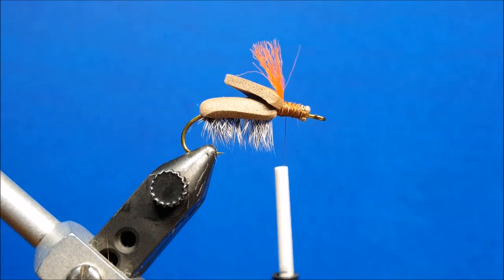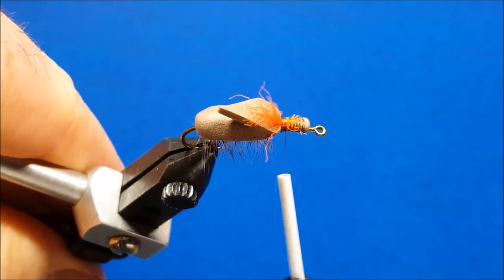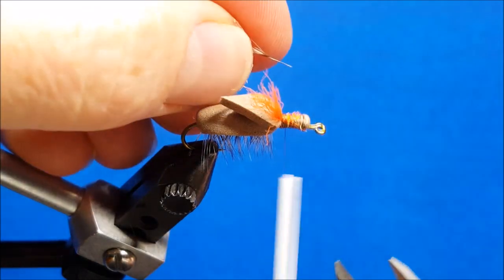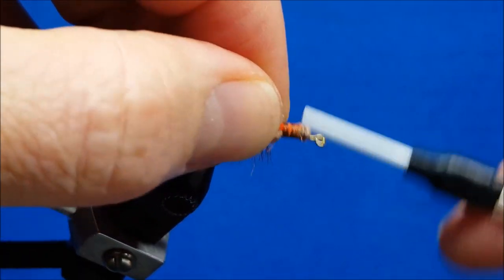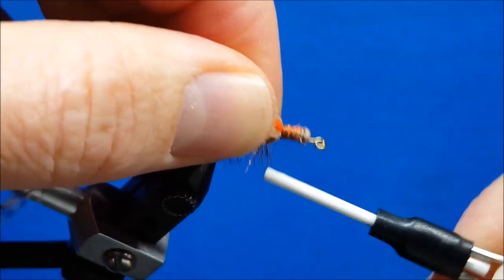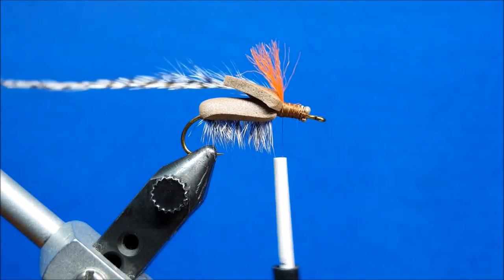I'm going to bring in my second grizzly hackle. I prefer to start this guy on the opposite side of the hook shank, so bring in the bottom end that I've stripped here. Catch this with the thread. I'll let that sit off to the side until we're ready for it.